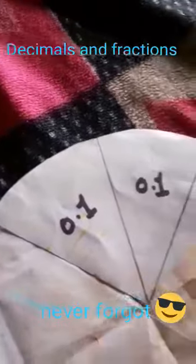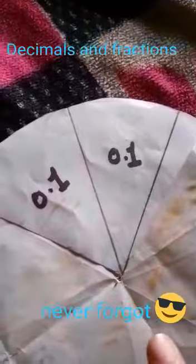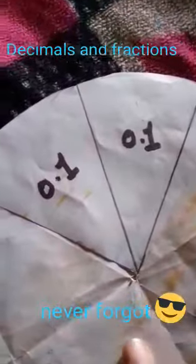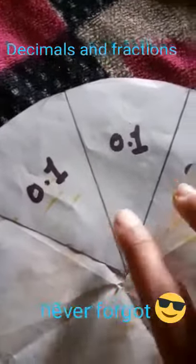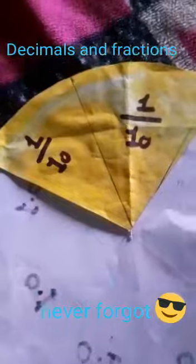Zero is the whole number and 1 is the decimal number in both terms. So 0.1 plus 0.1 equals 0.2. 0.2 equals 2/10. I hope you like my video, thank you.